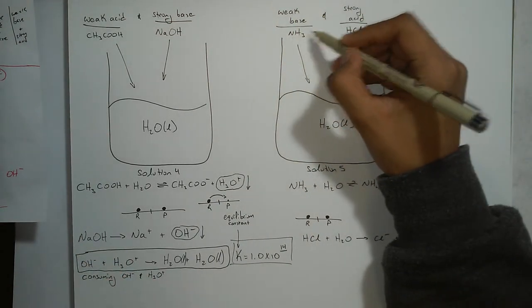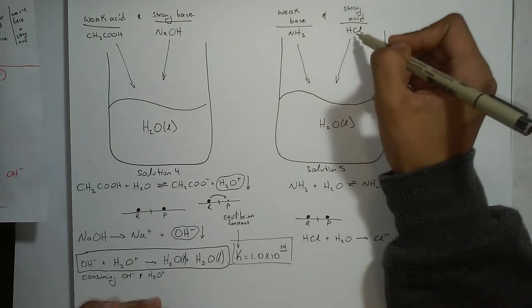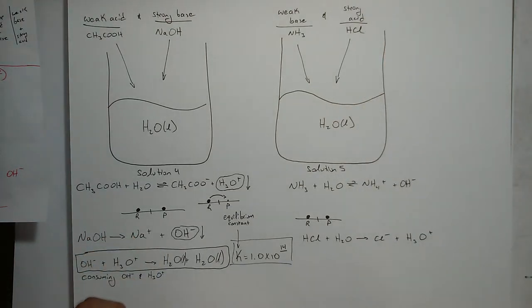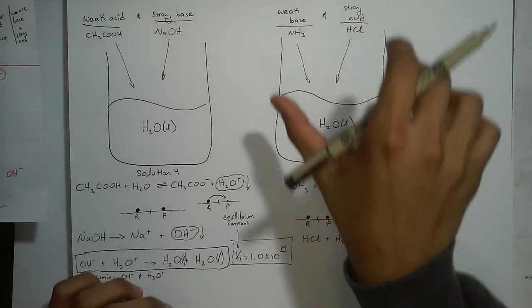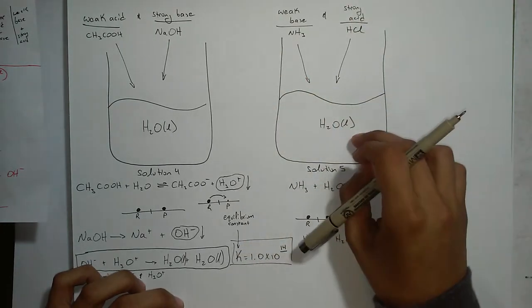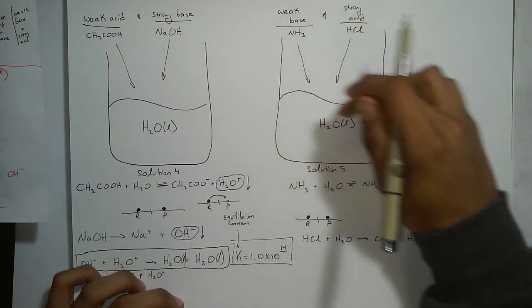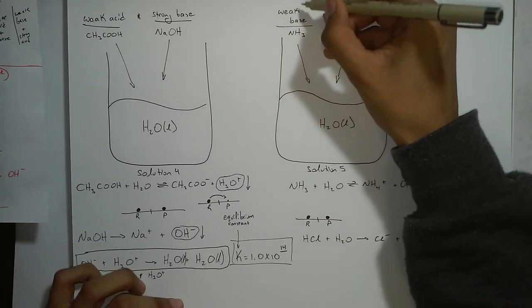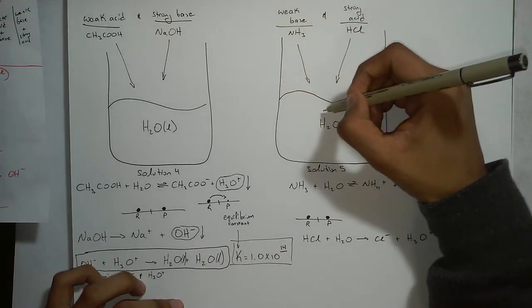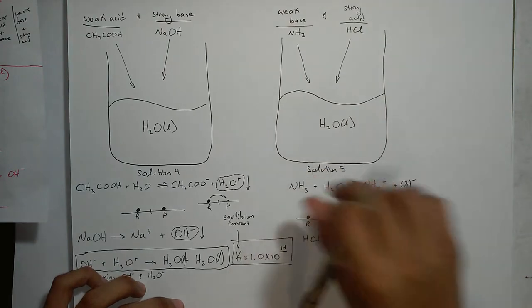Now, as a weak base, I picked NH3. As a strong acid, I picked HCl. So again, we're going to do the same things we did before. I have a beaker that just contains water. What happens if I take some weak base and toss it inside of the water?